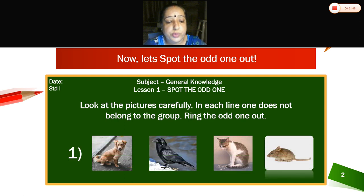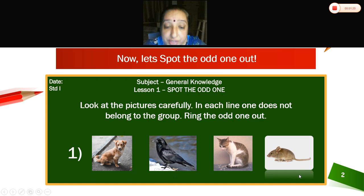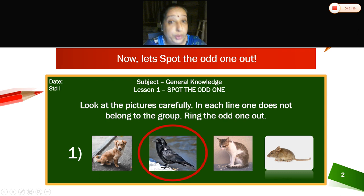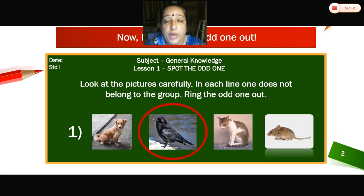Now the first one. Children, can you see here? The pictures are: dog, crow, cat, and mouse. Now children, tell me — which is the odd one here? Crow. Because crow flies in the sky, but dog, cat, and mouse do not fly in the sky. Yes children, you have to circle the odd one — ring the odd one out.